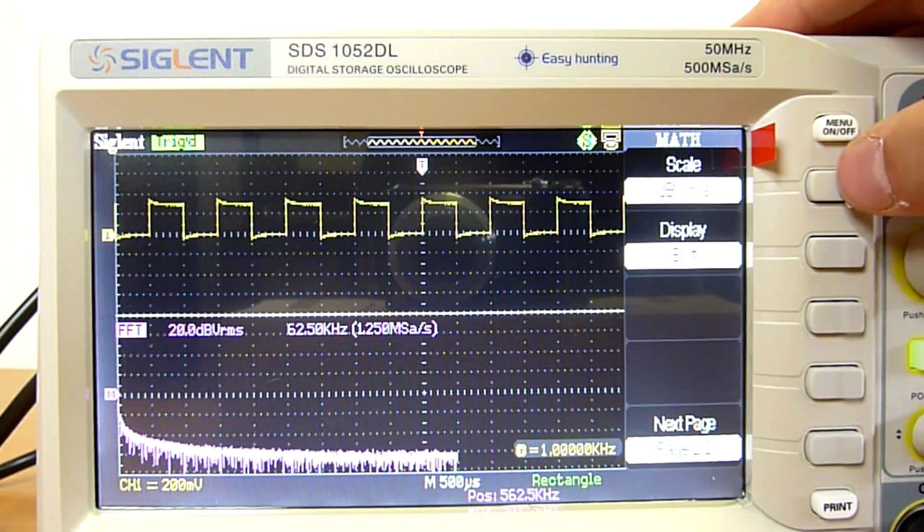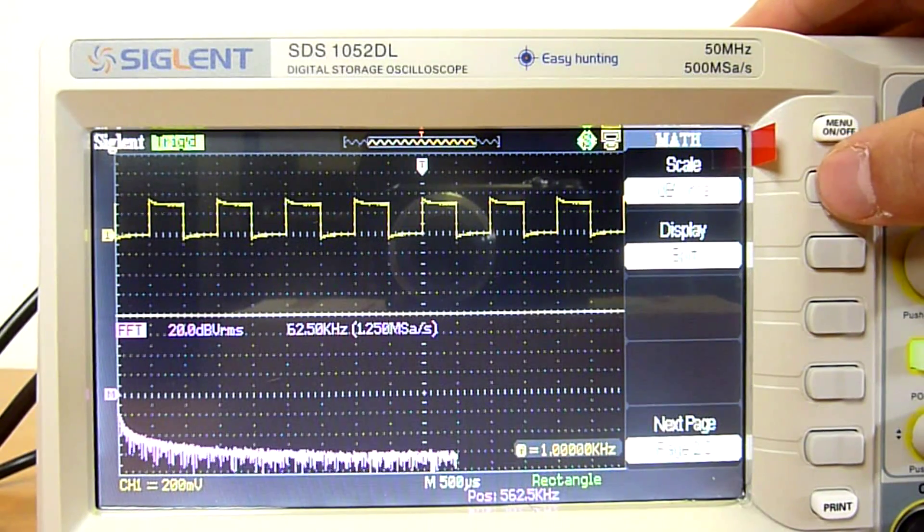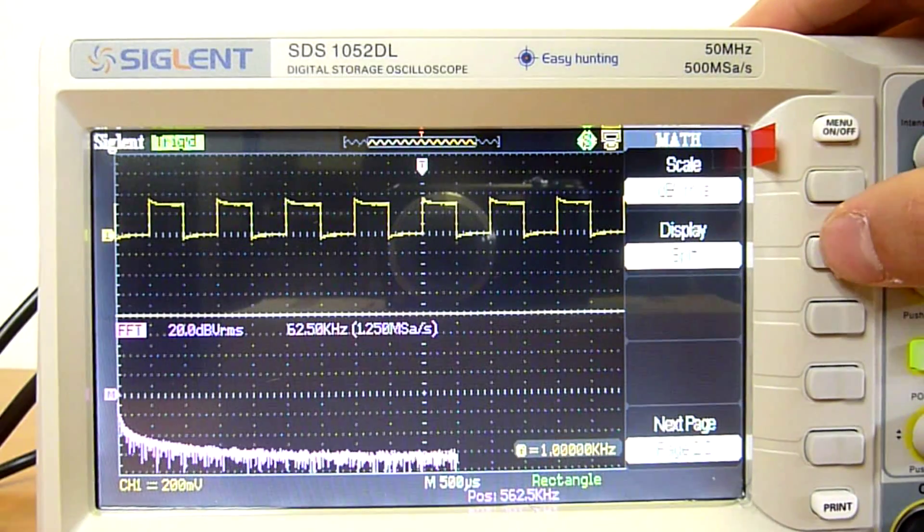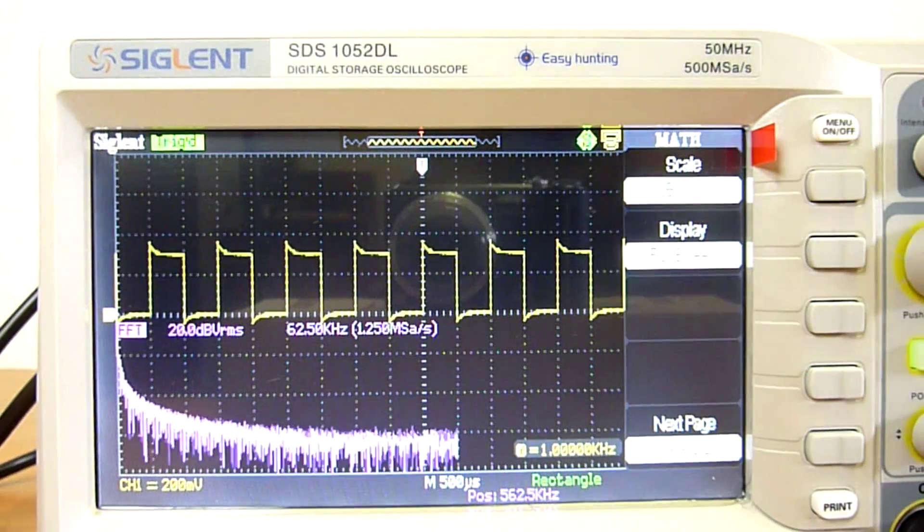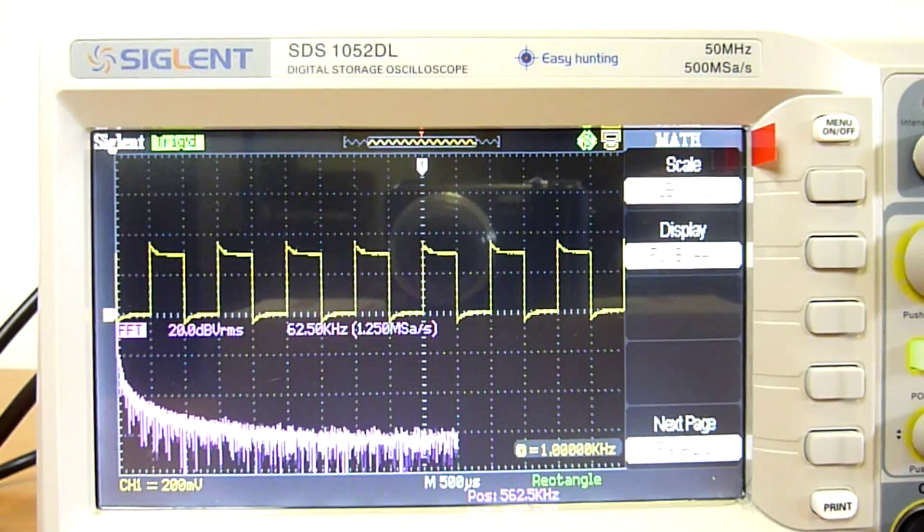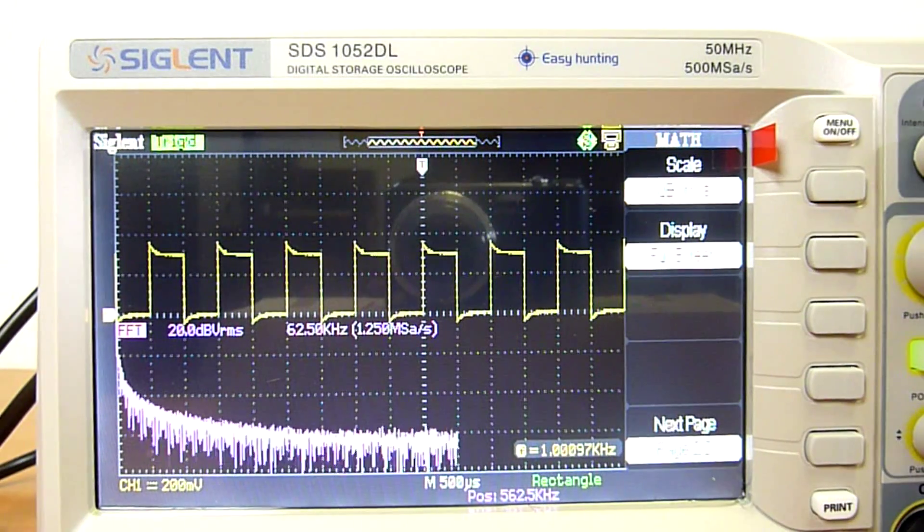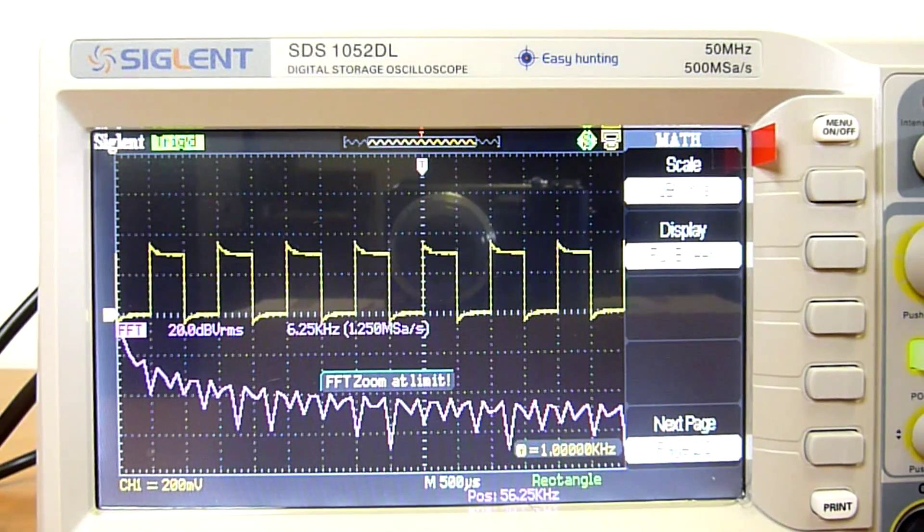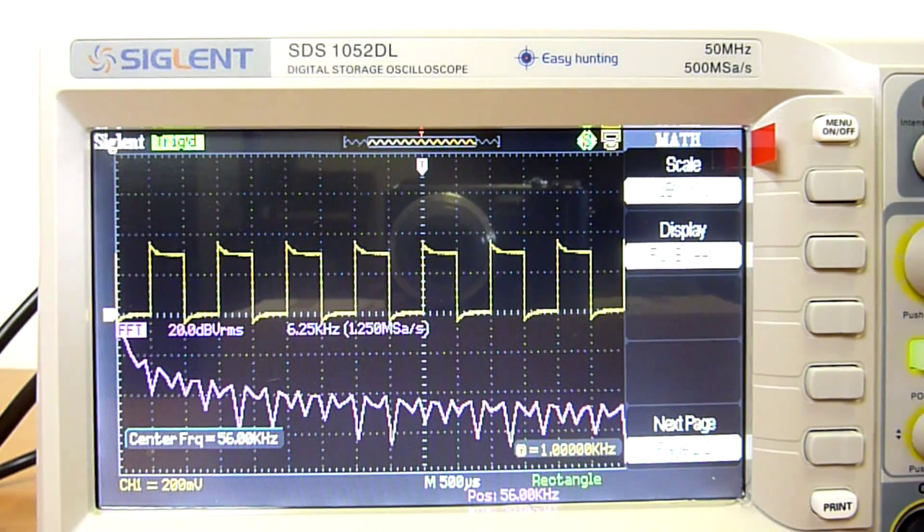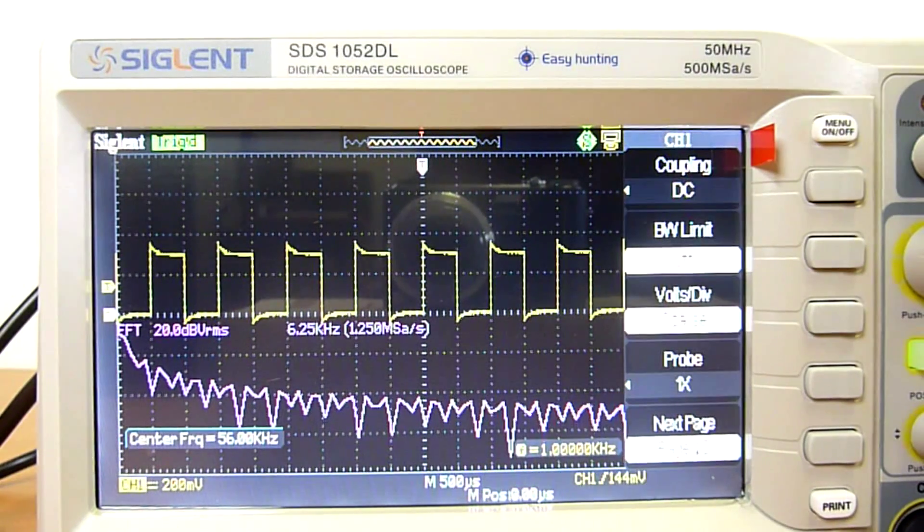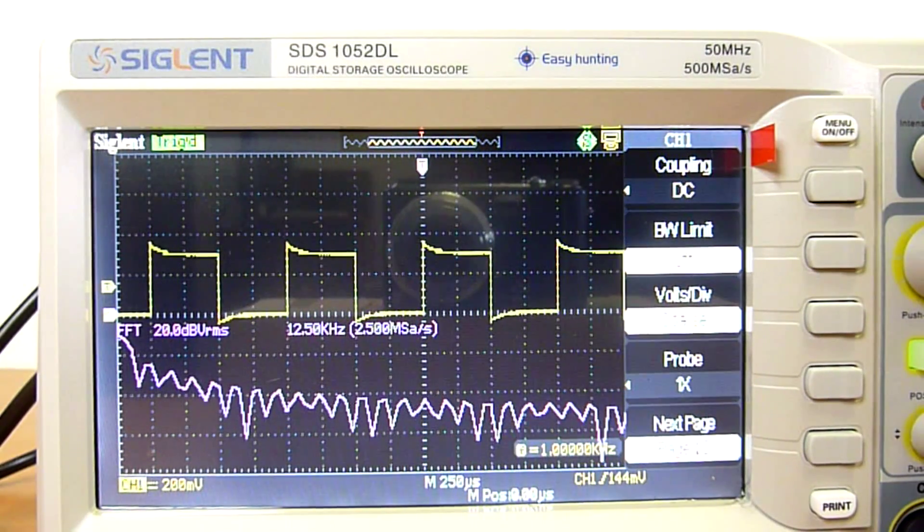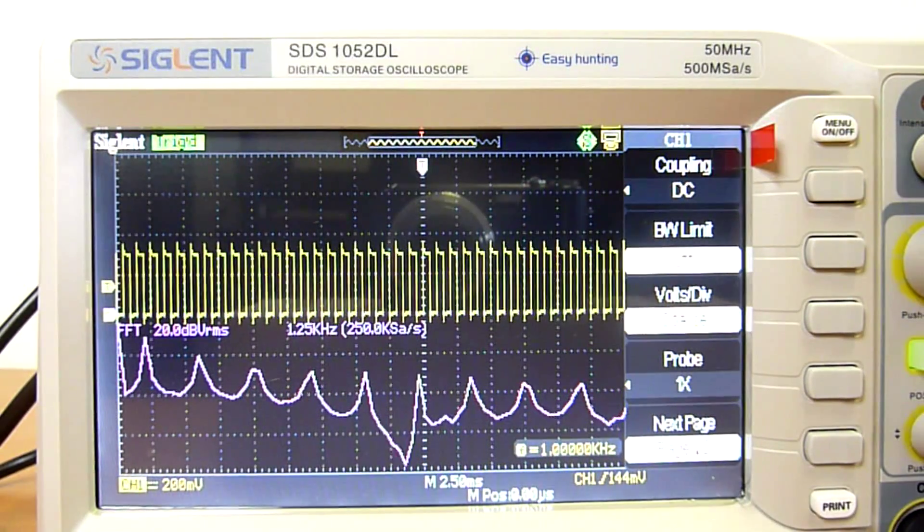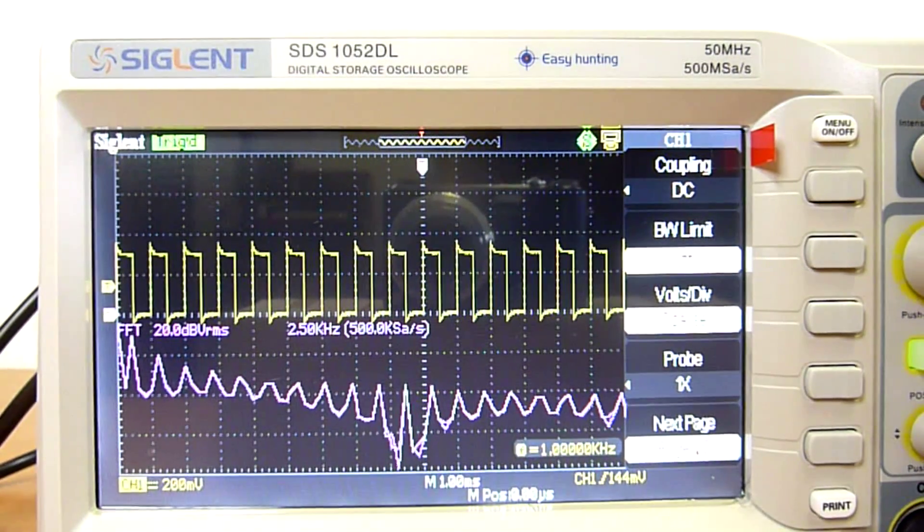And you can also change the scale from volts to decibels. You can have both waves in one chart. You can zoom the chart. You can also independently zoom the channel. Or switch the resolution.